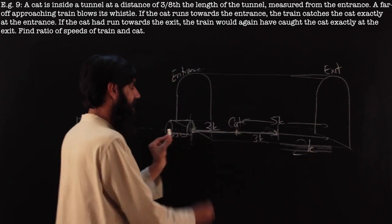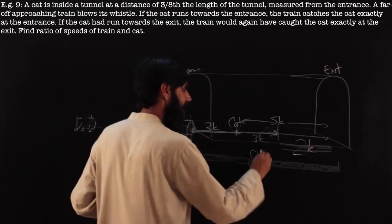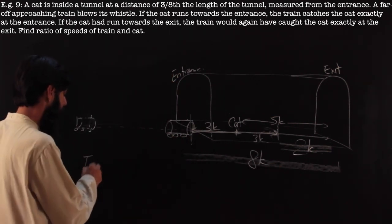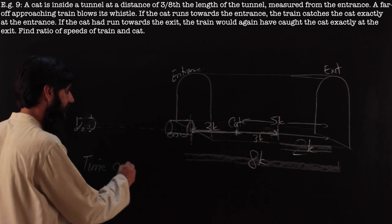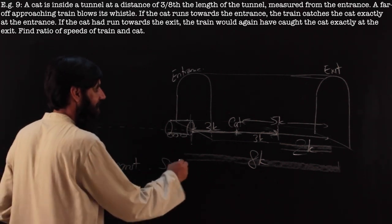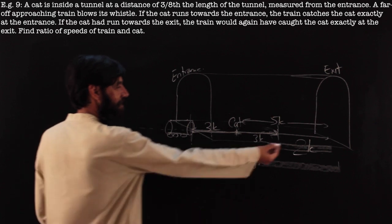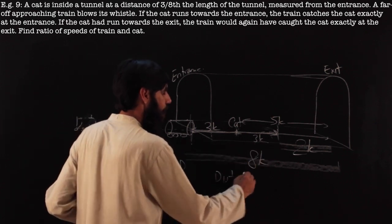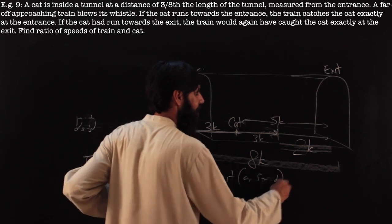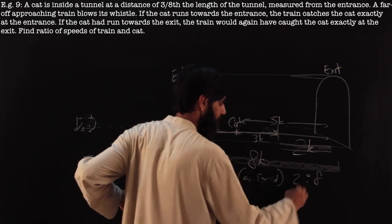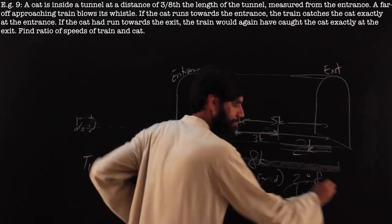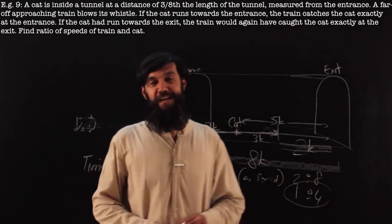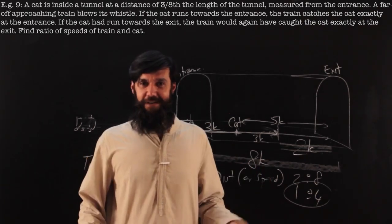Now the cat runs 2K more to the exit, and in that same time the train runs 8K — the full length of the tunnel. Time being constant, and since speed is directly proportional to distance covered when time is constant, the ratio of their speeds is 8 to 2, which simplifies to 4 to 1. No equation needed, no variables — that is the answer using proportionality.